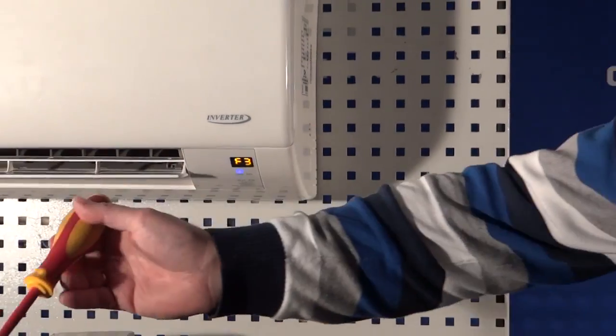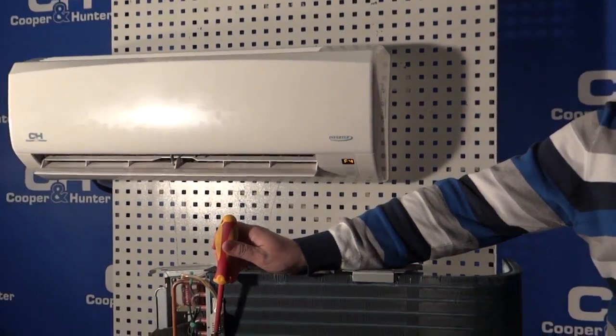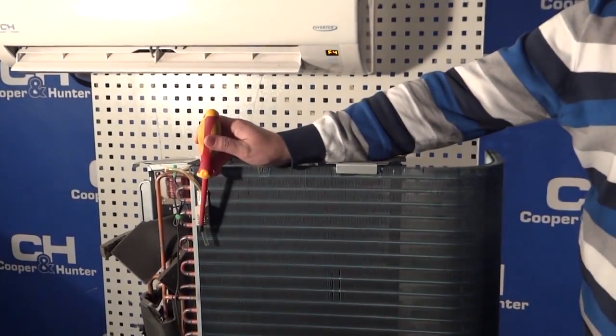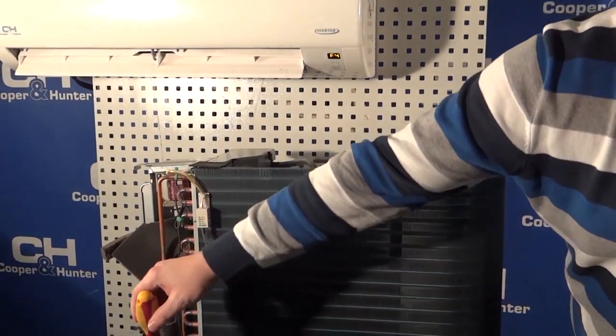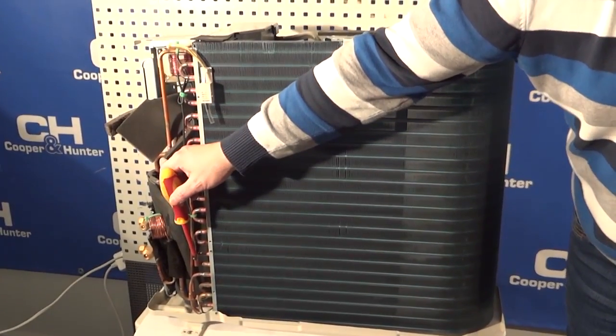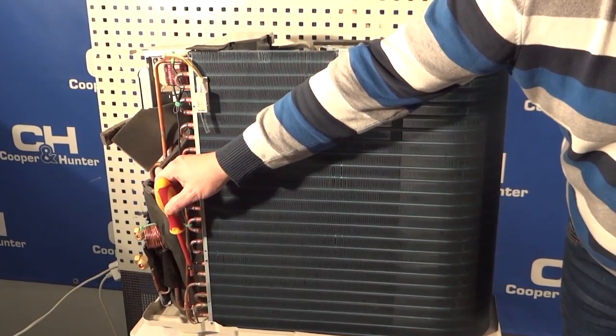F3 is the ambient air temperature near the outdoor unit. F4 is also responsible for the condensation temperature of the freon and it is on the condensed pipe of the outdoor unit.